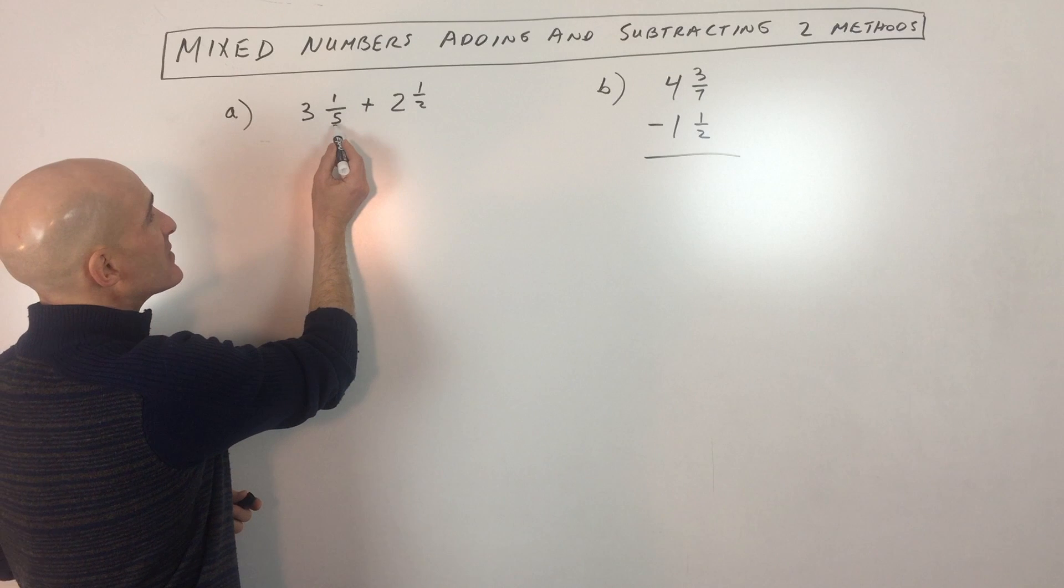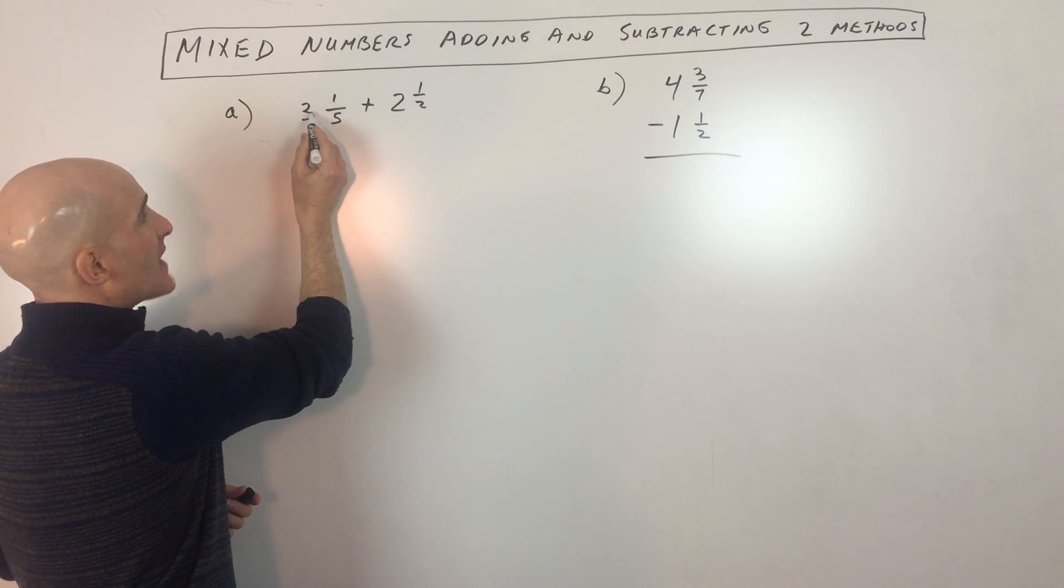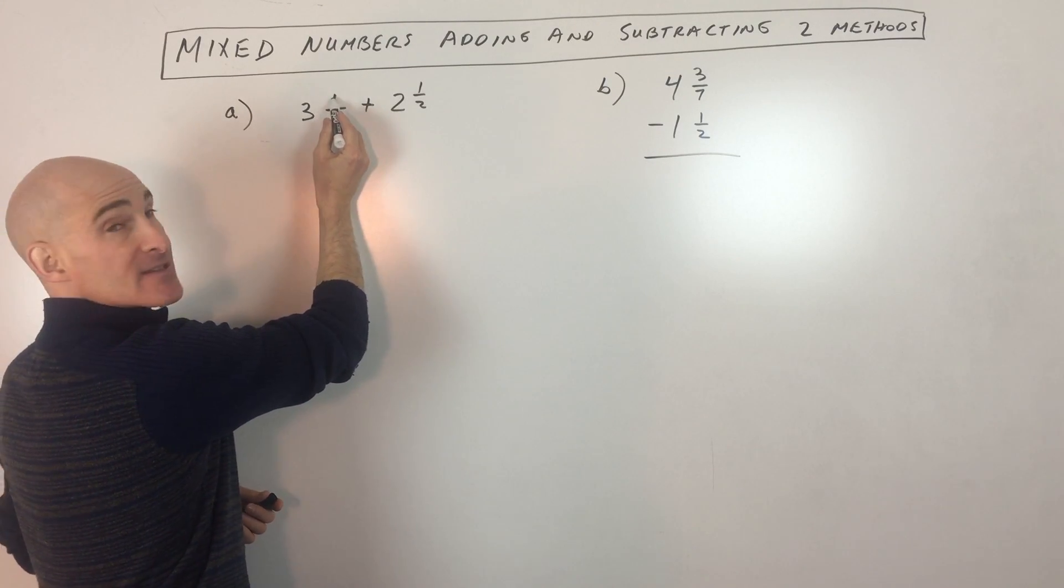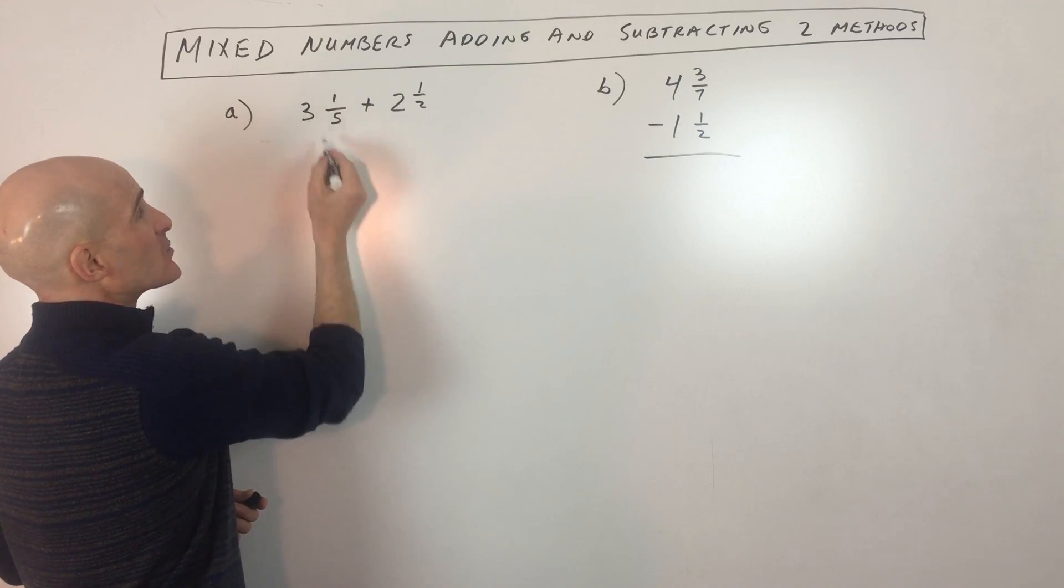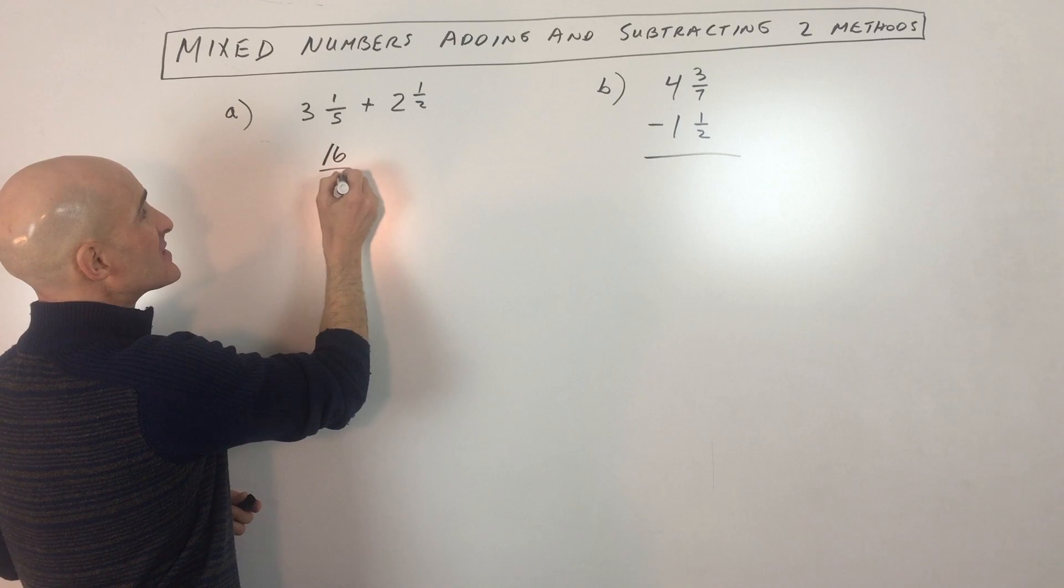So the way you do that is you take this number here, the denominator, times the whole number plus the numerator. So this is five times three is 15 plus one is 16. So this is 16 fifths.